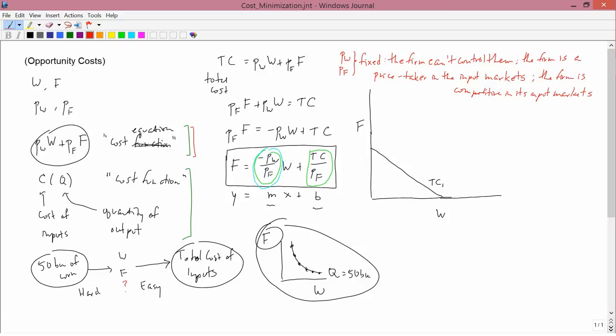The graphical result is that the price of water and the price of fertilizer are constants. They're fixed. The firm can't change anything about that. And so mathematically, minus Pw over Pf, which is the slope of the line, is a fixed constant. And so that's not going to change. Throughout the whole graph, you're going to have exactly the same slope of the cost equation. So all the total cost lines are going to have the same slope.